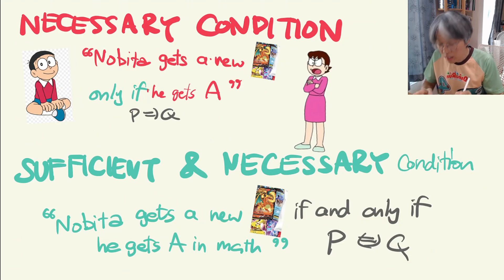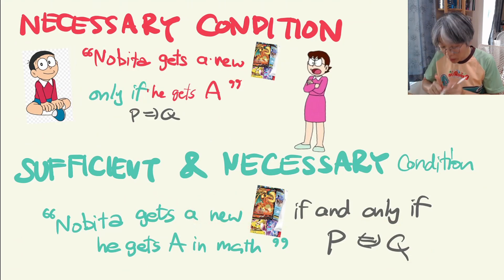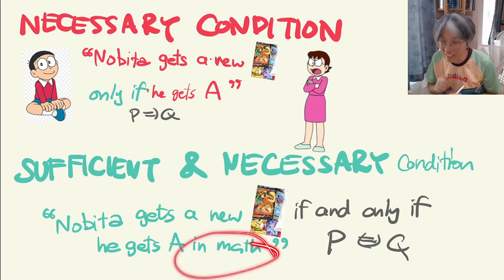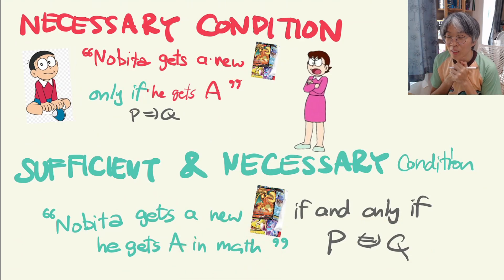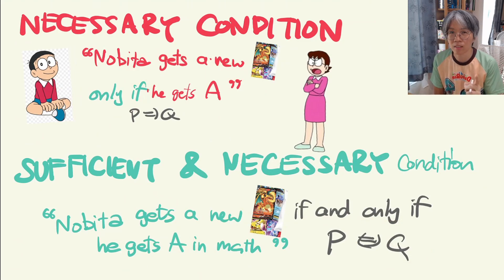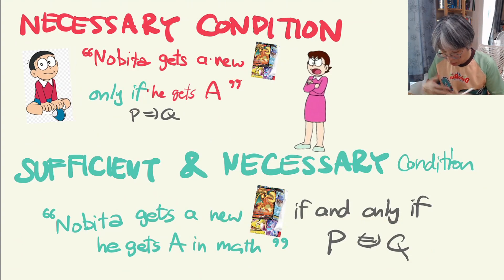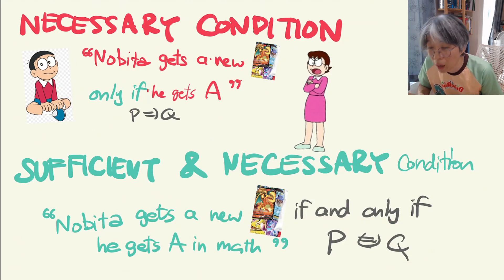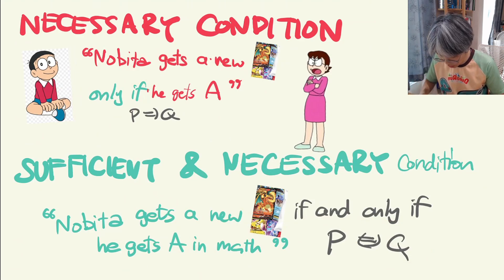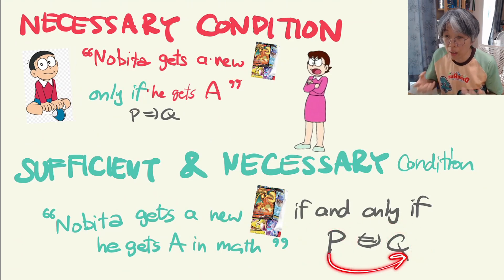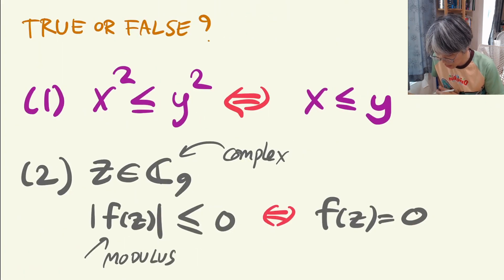And if he doesn't get a new card, you can also conclude that it's because he didn't get an A in math — not because he doesn't have money, not because of something else. So P if and only if Q is a very powerful result in mathematics, because you can use each of them interchangeably. That's basically what it means.